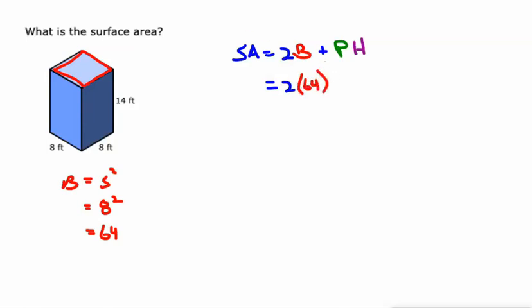What about the perimeter of the base? Well, we got 8 plus 8 plus 8 plus 8, or why not just do 4 times the side length, which is 4 times 8, which is 32.